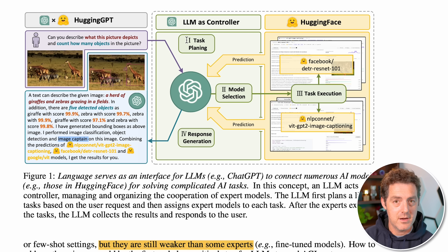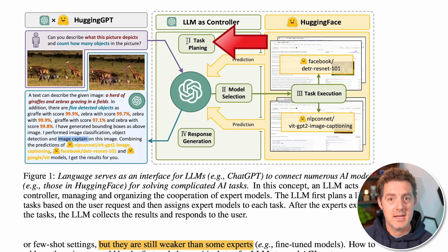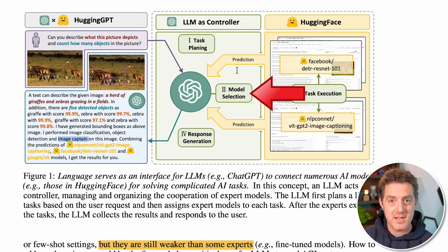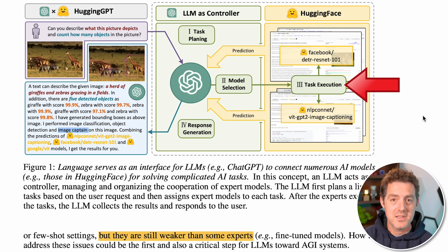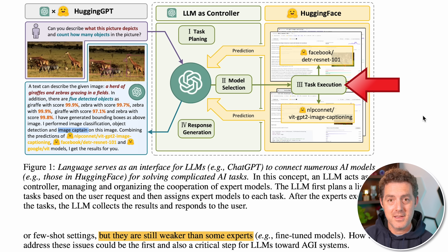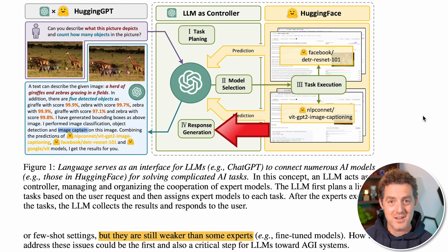There are four different steps that HuggingGPT does when it receives a request. First, it does task planning — it understands the prompt and starts to plan out what tools it's going to need. Next, it does model selection: it looks through all of the different models it has access to, chooses the ones it thinks it's going to need for the job, and brings them in. Then it actually executes the task, using all of those different models, grabs the data it needs, and ingests it back. Finally, it takes all of that data and summarizes it or boils it down into a response to give back to the user. Really awesome stuff.